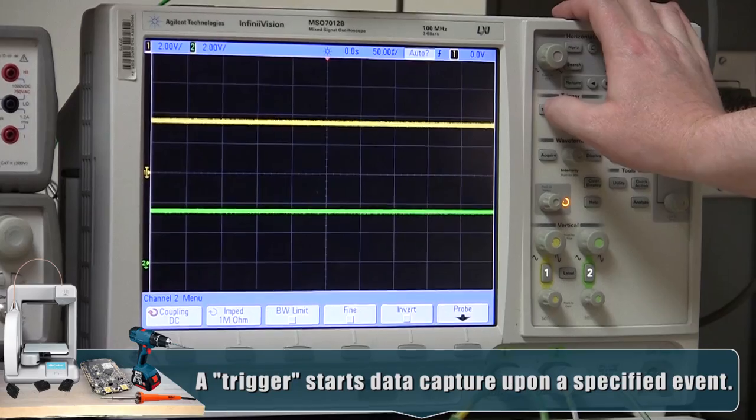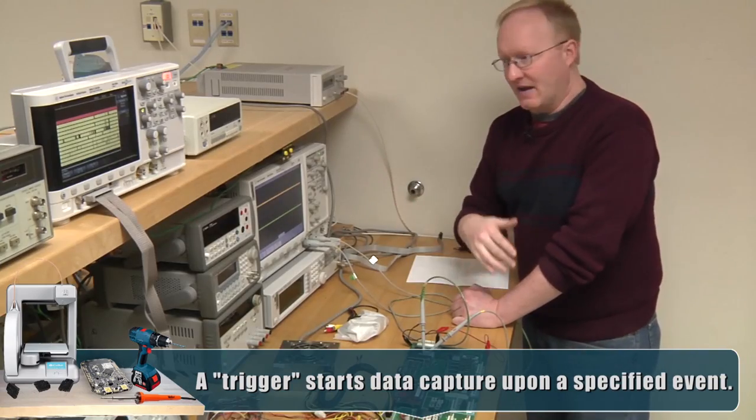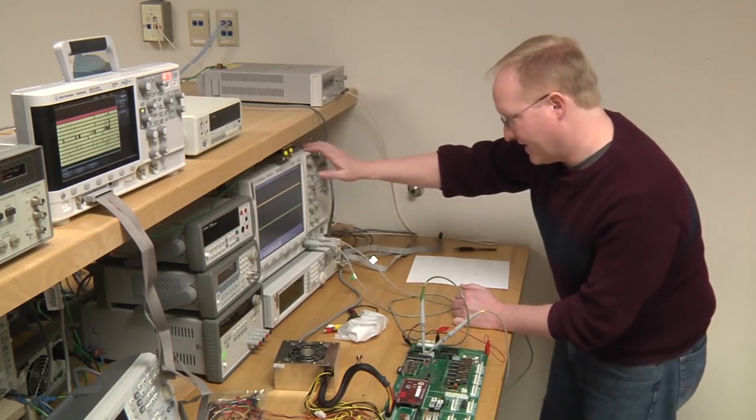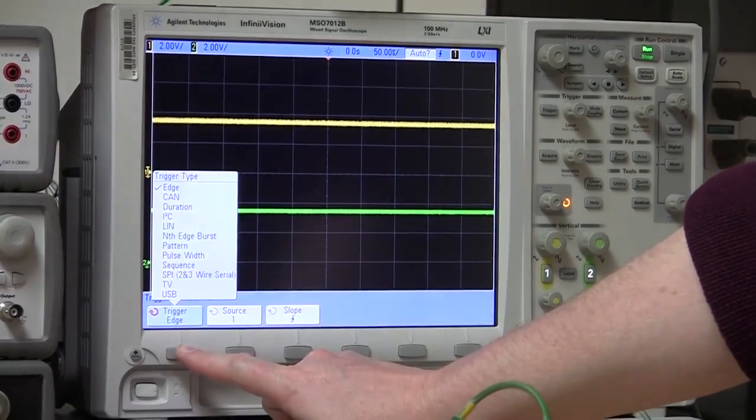Trigger, basically, is something on a scope where it sees a certain event and then triggers an action. It'll store the data or analyze it some other way.